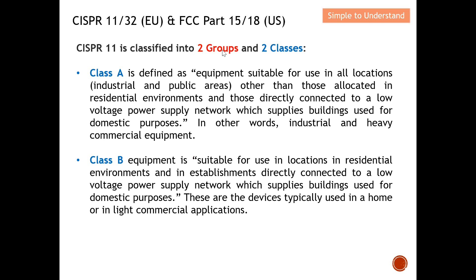CISPR 11 is classified into two groups and two classes. Now for the two classes: Class A is defined as equipment suitable for use in all locations other than those in a residential environment or those directly connected to a low-voltage power supply network supplying buildings used for domestic purposes. In short, Class A is mainly for industrial use — industry and heavy commercial equipment fall under Class A.